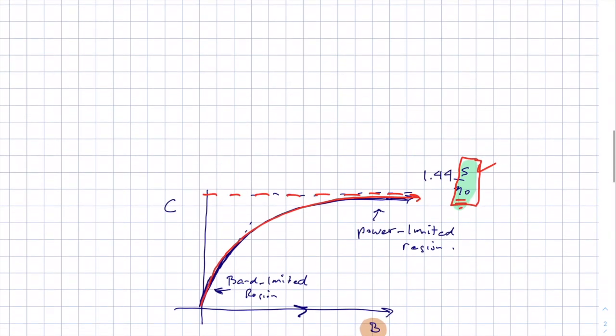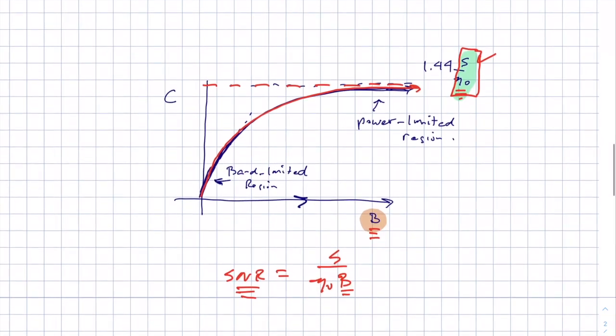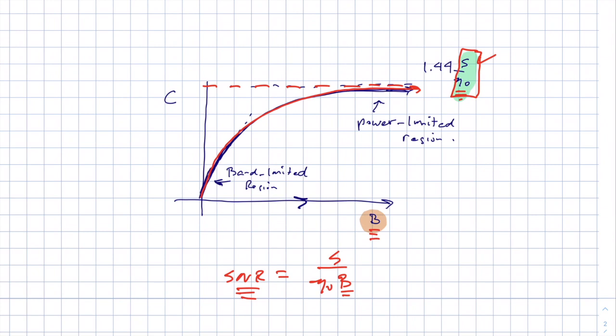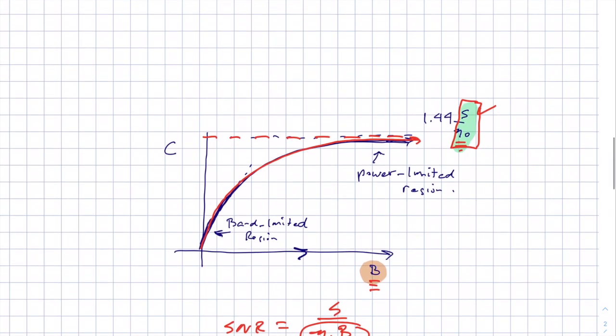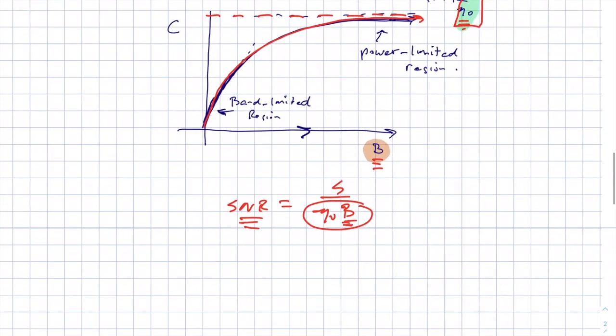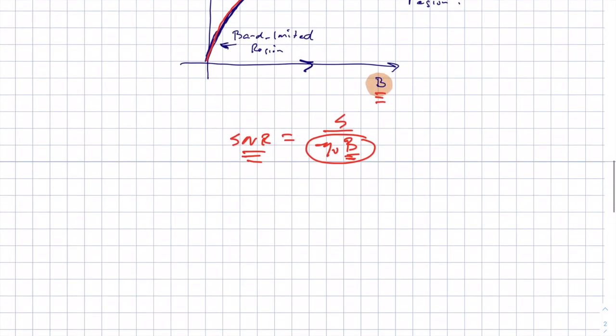So it's power-limited in the sense that the signal power is constrained. But if B goes to infinity, this part down at the bottom also goes to infinity. So just clearing up that mathematical detail. All right. So that does it for example number two.